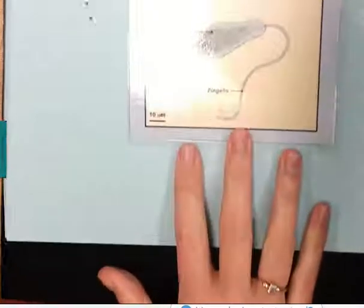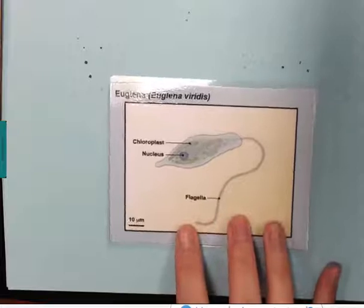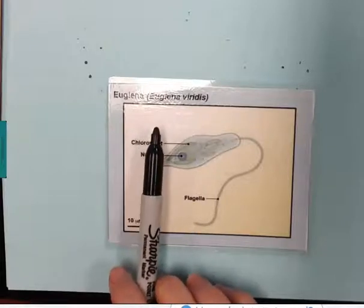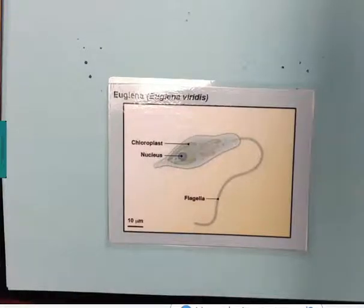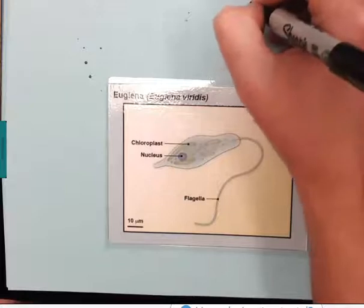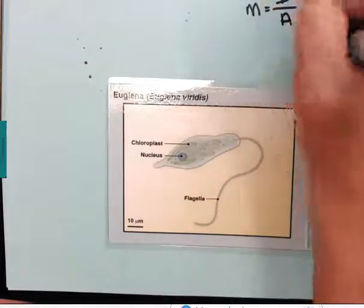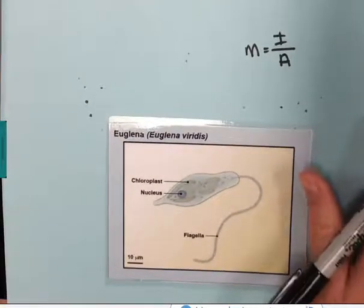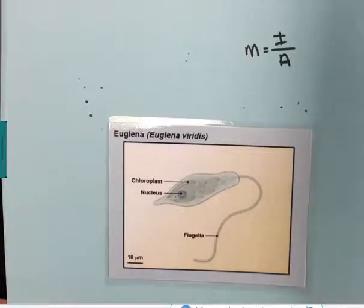Here is an image of a euglena. I don't know how big the euglena actually is and I want to figure out what's the magnification of this particular image. Again, I have my magnification equals image over actual, but how do I figure out what I'm working with?